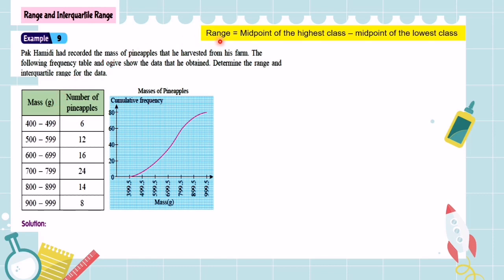What is the formula for range? The formula for range equals the midpoint of the highest class minus the midpoint of the lowest class. The highest class is the last row. The midpoint is the lower limit plus upper limit divided by 2.